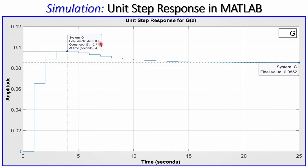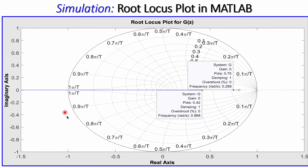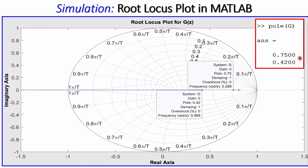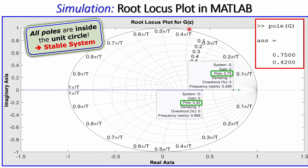Looking at the unit step response in MATLAB, the peak is about 12.7, well below 100%, and the response reaches a constant steady-state value without blowing up exponentially. This confirms a stable system. The root locus plot in the z-plane also shows both poles — at 0.75 and 0.42 — clearly inside the unit circle, again confirming stability.